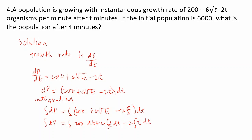p equals 200t plus 6 times t to the power 3/2 over (3/2) minus 2t squared over 2 plus C.